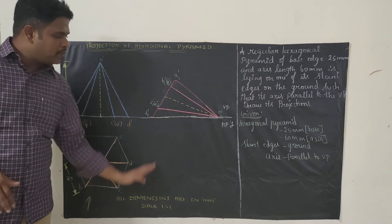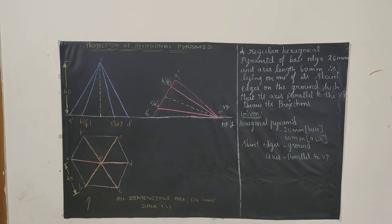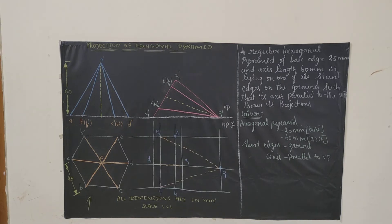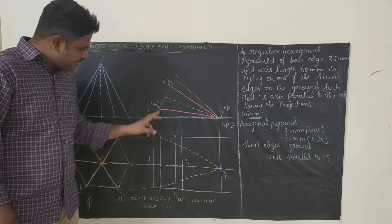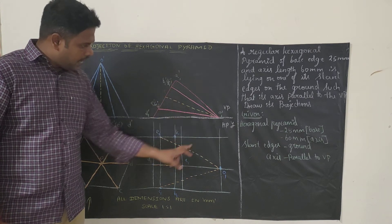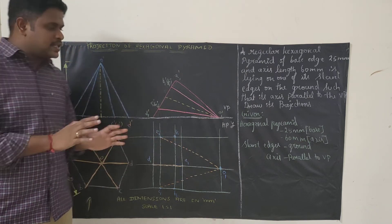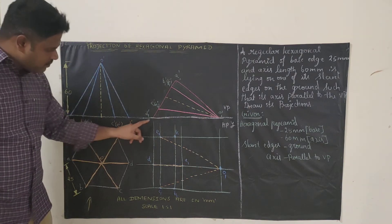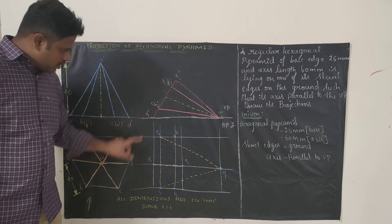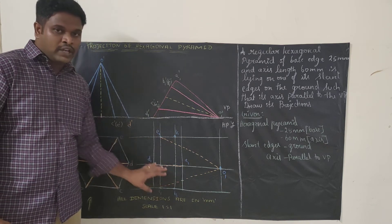When we project all the points vertically from the top view and horizontally from the tilted front view, we get intersection points. Once we find all intersection points, the problem is nearly complete. Draw vertical lines from D, C, B, A, O in the top view, and horizontal lines from D, C, E in the tilted front view. All these lines will intersect at their corresponding points — D with D gives one intersection, C with C gives another, and so on.